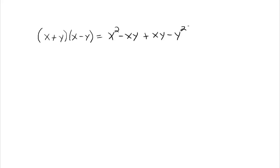We notice that the middle terms — the negative xy and the positive xy — they disappear, because they're the same but opposite signs. So this just goes to x squared minus y squared. So anytime we have a binomial times a binomial of this form, x plus y times x minus y, it's always going to multiply out to be x squared minus y squared.